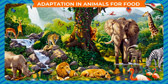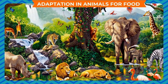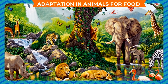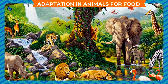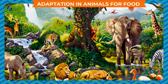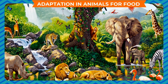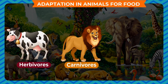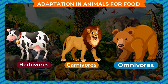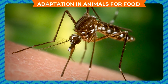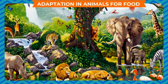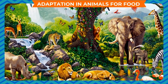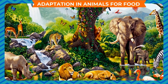Adaptation in Animals for Food. As we all know, animals are categorized in different groups according to their eating habits. Some animals are herbivores, some are carnivores, some are omnivores and some are parasites. Animals have different adaptations that enable them to eat different kinds of food.